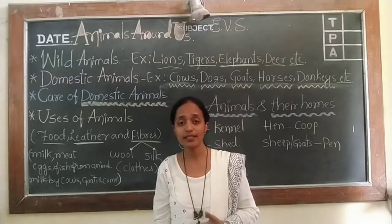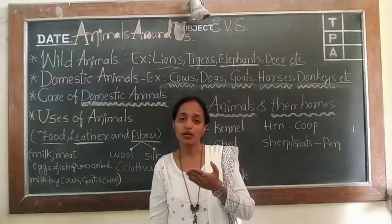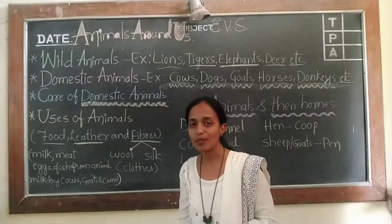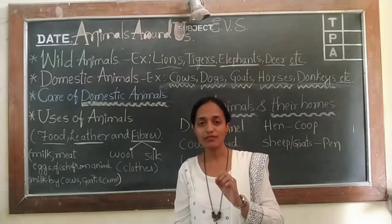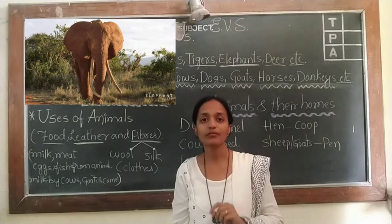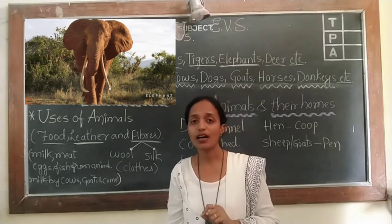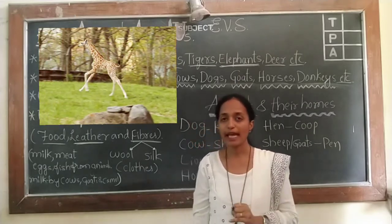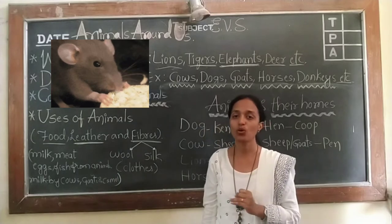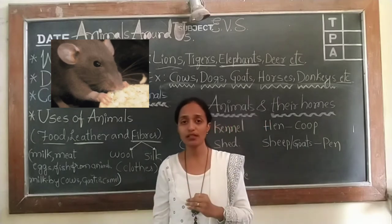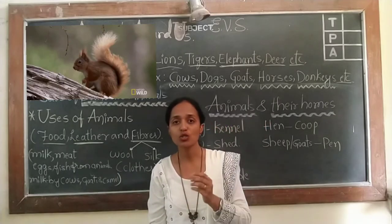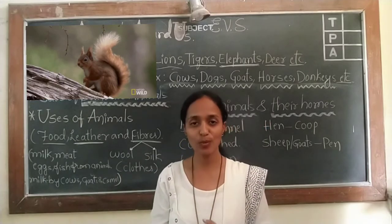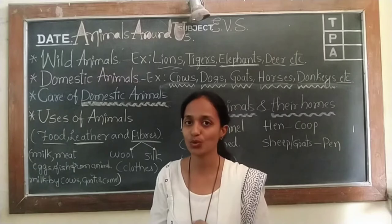As I said, some animals are big in size. Examples: elephants and giraffe are big in size. Rats, mole, and squirrel are smaller in size.